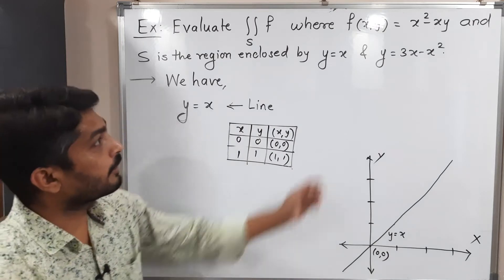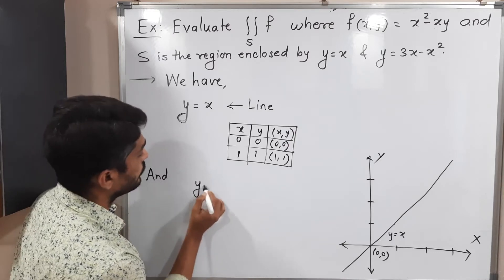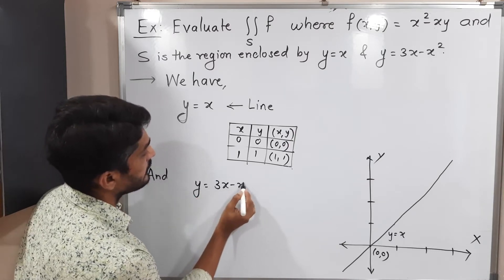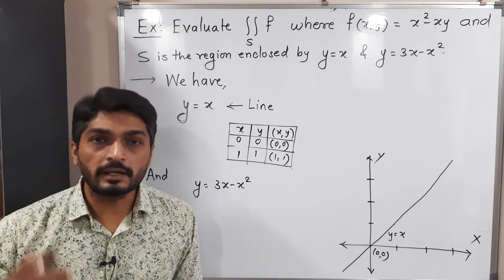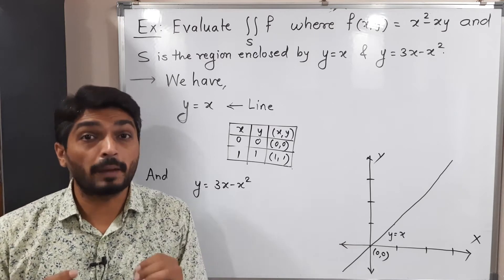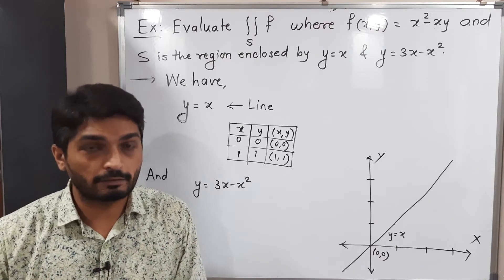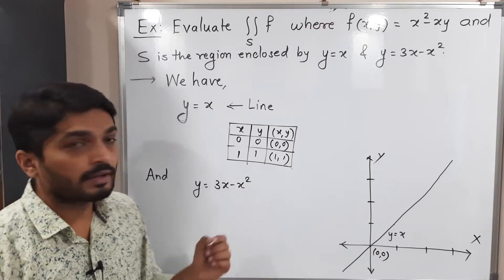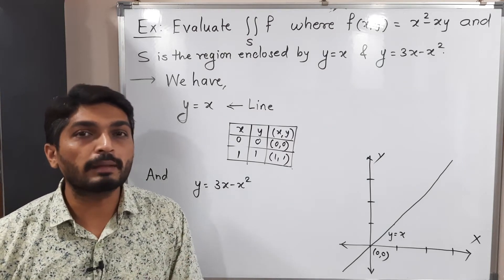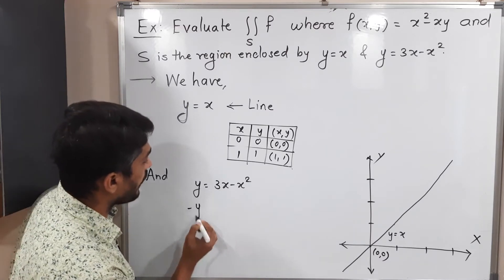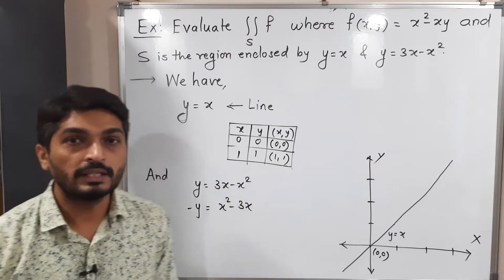After that, we have y = 3x - x². The highest power of y is 1 and the highest power of x is 2, so it 100% represents a parabola. But this parabola is not in standard form. To convert it, the coefficient of x² should be non-negative, so we multiply both sides by -1, giving: -y = x² - 3x.